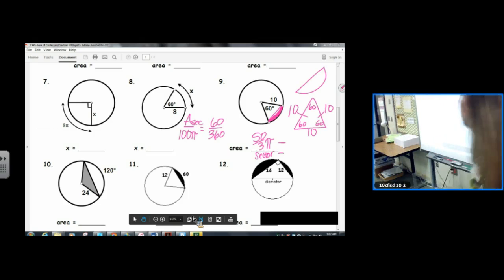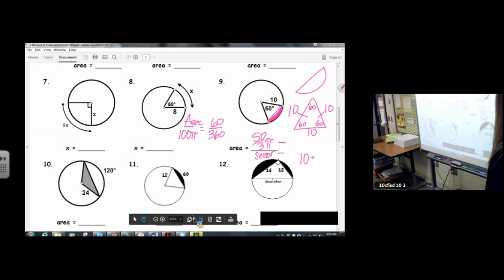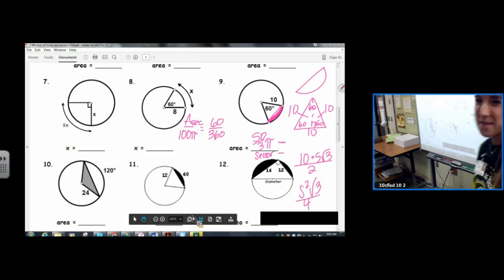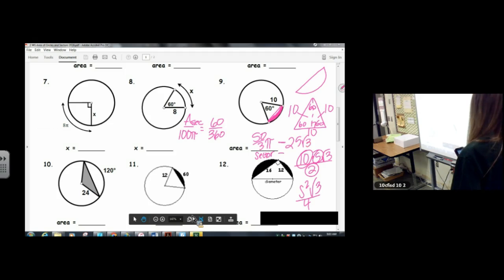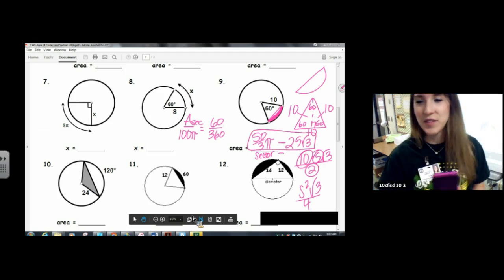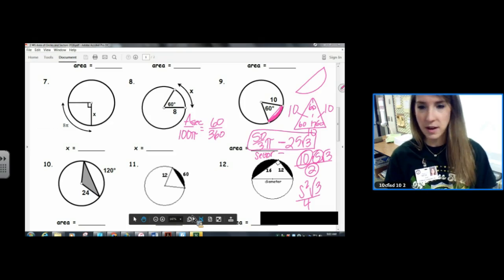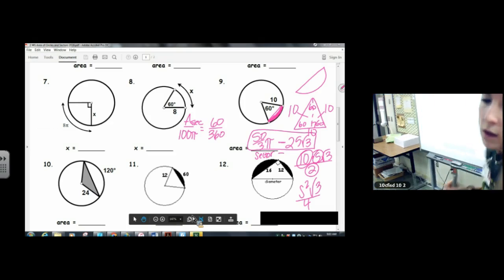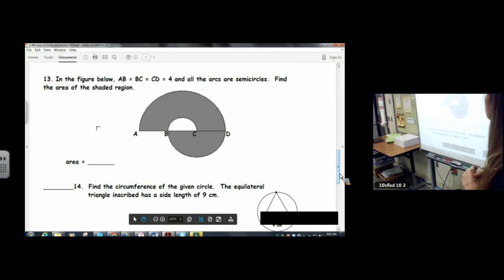I'm gonna go quickly through this. Base times height divided by 2. The height is 5 root 3. Now if you want to do side squared root 3 over 4, if you remembered that fancy formula, you could do that as well. Ignore me if you didn't remember it. All right, 10 times 5 is 50, divided by 2 is 25. So that is a complex answer, isn't it? Fifty-thirds pi minus 25 root 3.